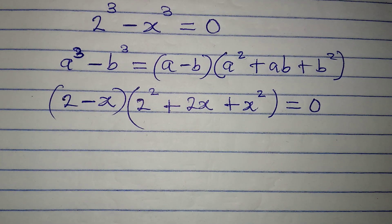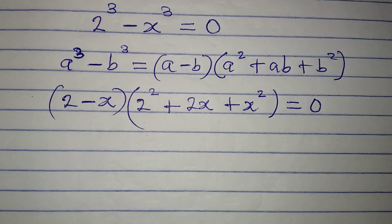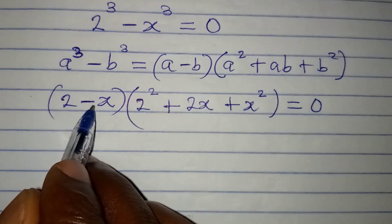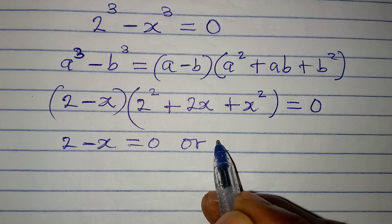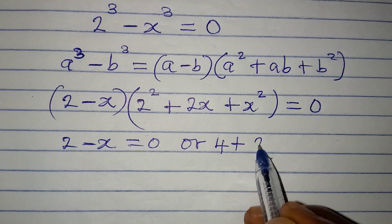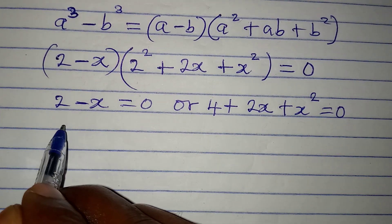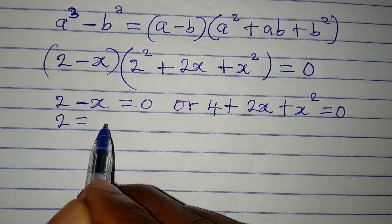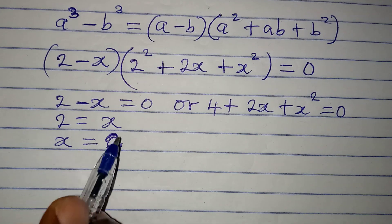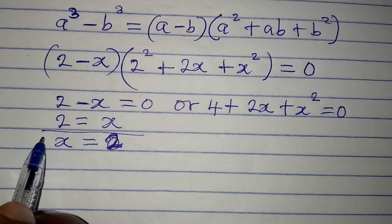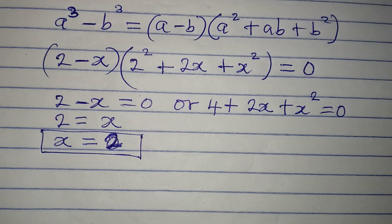We apply the zero product rule: either (2 minus x) equals 0 or the quadratic factor equals 0. From (2 minus x) equals 0, we get x equals 2. This is one of the values of x that satisfies the given equation.